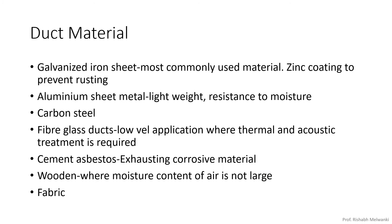Next we will see different duct materials. First is galvanized iron sheet, which is widely used in comfort and commercial applications. Galvanized iron sheet has a zinc coating done on the sheet to prevent rusting. Next we have aluminium sheet metal, which is used in lighting commercial applications for aesthetic requirements. Then there is the metallic part overview. Next is fiber glass duct, which is used for thermal and acoustic treatment.